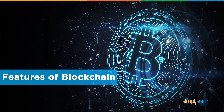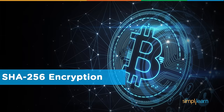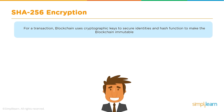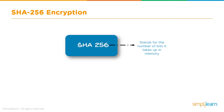The typical features of blockchain involve SHA-256 algorithm-based encryption, proof of work consensus algorithm, usage of public and private keys to sign messages, the role of miners to validate and verify transactions, and how to create a distributed public ledger. For transactions, blockchain uses cryptographic keys to secure identities and a hash function to make the blockchain unalterable — including private and public keys, and SHA-256.